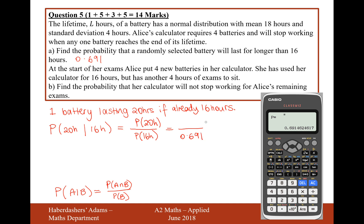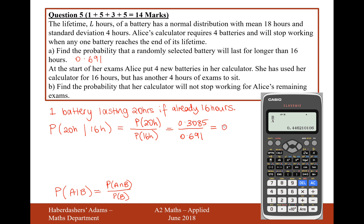Now we need to work out the probability of 20 hours or more. I'll store the 0.691 value in the calculator as A, pressing STO and then the button above it for red A. Then I'll go back to normal CD mode and type in a lower boundary of 20, no upper boundary, standard deviation 4, mean 18, and we get 0.3085. I'll store this as B. Then I'll compute B divided by A in the normal calculator mode, and we get a final answer of 0.446 to three significant figures.